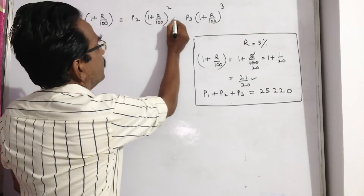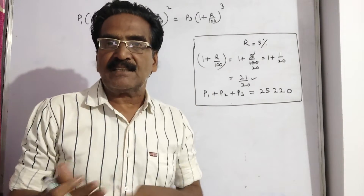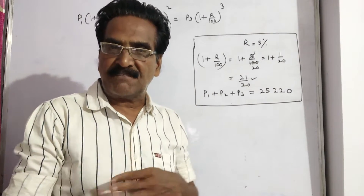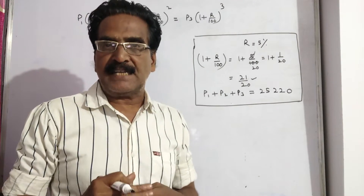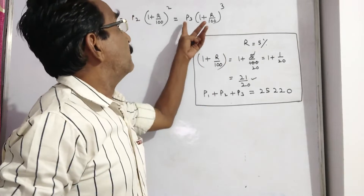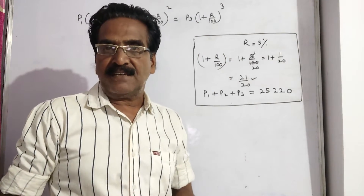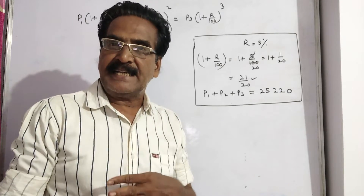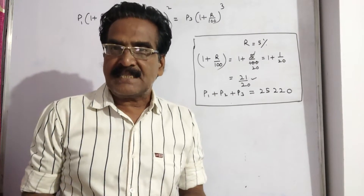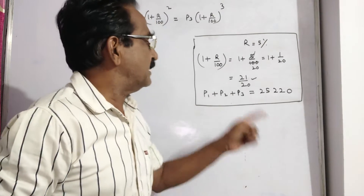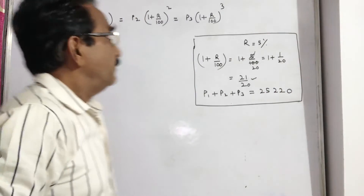All these three installments are equal, where P1 is the present worth of the installment paid after one year, P2 is the present worth of the installment paid after 2 years, and P3 is the present worth of the installment paid at the end of 3 years. The total present worth P1 plus P2 plus P3 is 25,220.